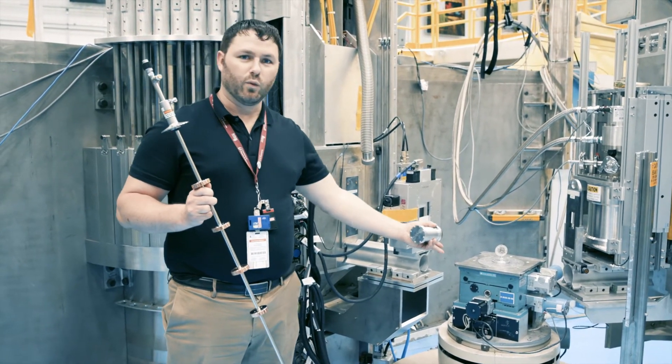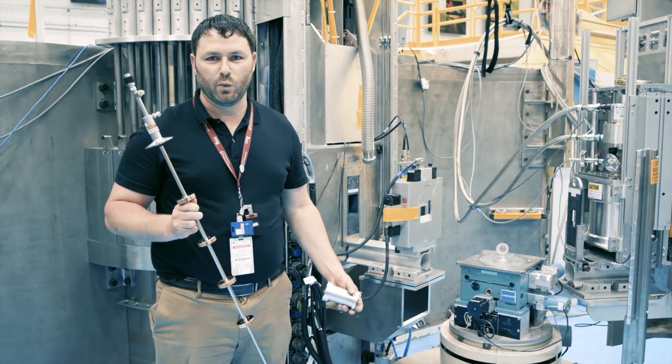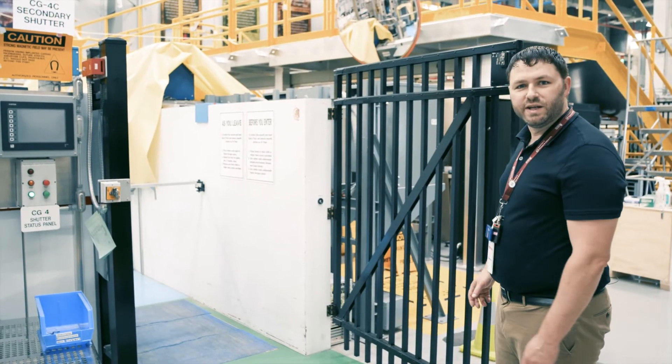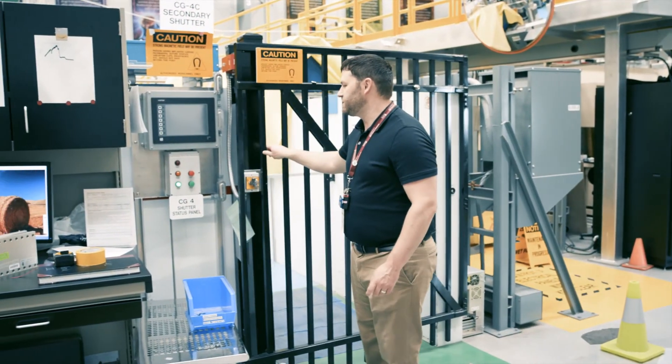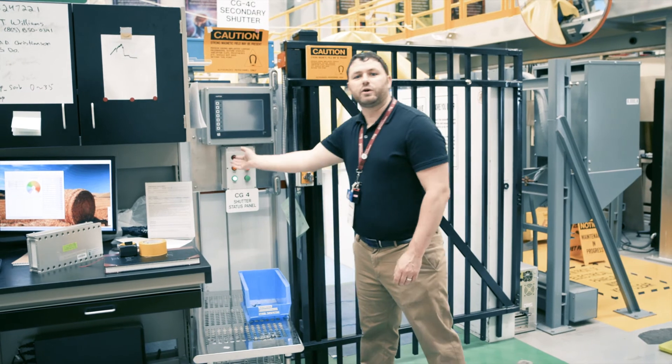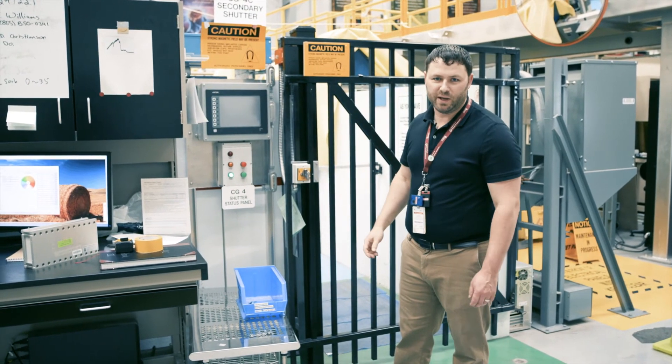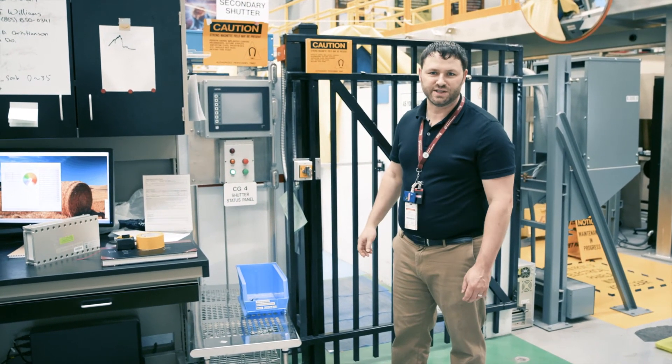Those will then go right here on the sample table so that we can measure them. And finally, when we're ready to do our measurements, we can restrict access to the instrument and turn on the shutter in order to enable neutrons to come down the beam line and scatter off of our sample.